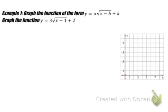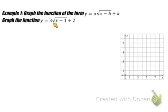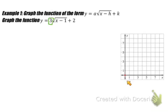Example 1: graph the function y equals 3 times the square root of x minus 1, plus 2. Taking a look right away, we can see what numbers are affecting the parent graph — there's a 3, we have a minus 1 in the radicand, and also a plus 2 outside. Since a is positive, the graph is not going to be reflected in the x-axis.